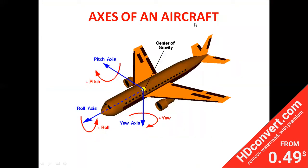Now, the axes of an aircraft: there are three axes, all passing through the center of gravity. These are the roll axis (longitudinal axis), pitch axis (lateral axis), and yaw axis (normal or vertical axis). The longitudinal axis is also known as the roll axis, the lateral axis as the pitch axis, and the normal vertical axis as the yaw axis.